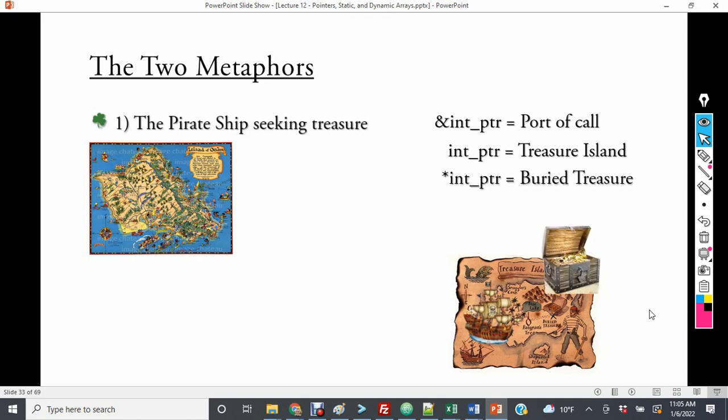And then when we get to the actual island, we have the buried treasure. In order to have that buried treasure, we dereference the pointer. In this case, star int pointer gives us the information. And in the code, it was the number five.